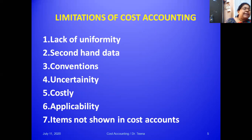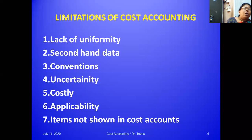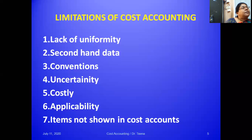Costing depends on financial accounts for a lot of information, and any errors in that data will creep into cost accounts as well. The third limitation is conventions — several conventions are routinely applied in costing which may not be appropriate in all situations. For example, classifying overheads into variable and fixed, or recovering overheads on a machine-hour or labor-hour basis — these conventions may not suit every circumstance.